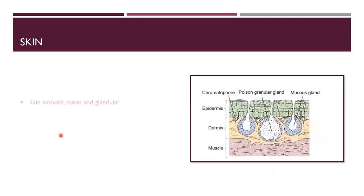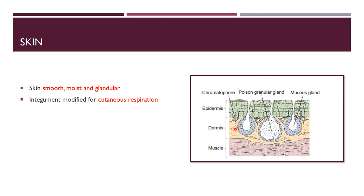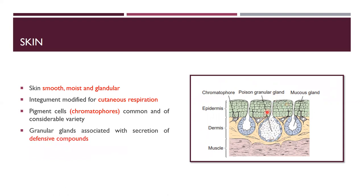The skin of amphibians is smooth, moist, and glandular — moist due to mucus gland secretions. The skin is modified for cutaneous respiration: exchange of carbon dioxide and oxygen across the skin by diffusion. Pigment cells called chromatophores are present. Granular glands are associated with the secretion of defensive compounds — they are poison glands that release poisonous secretions helpful for the amphibians' defensive mechanism.